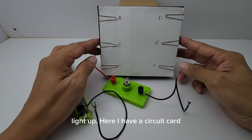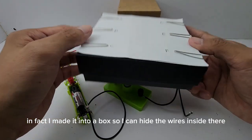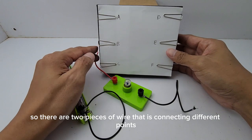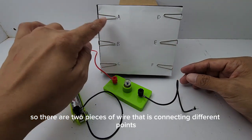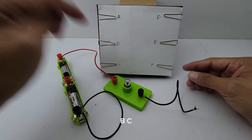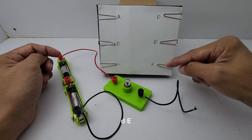Here I have a circuit card. In fact, I made it into a box so I can hide the wires inside there. There are two pieces of wire that is connecting different points. There's point A, B, C, D, E, and F.